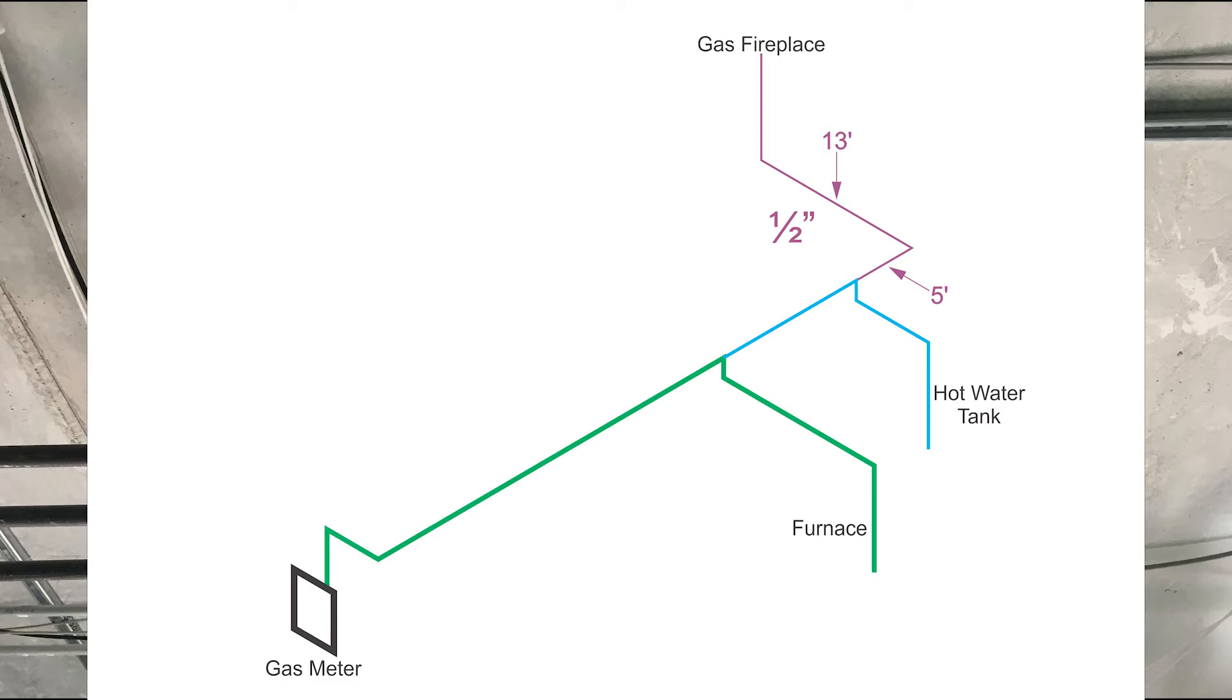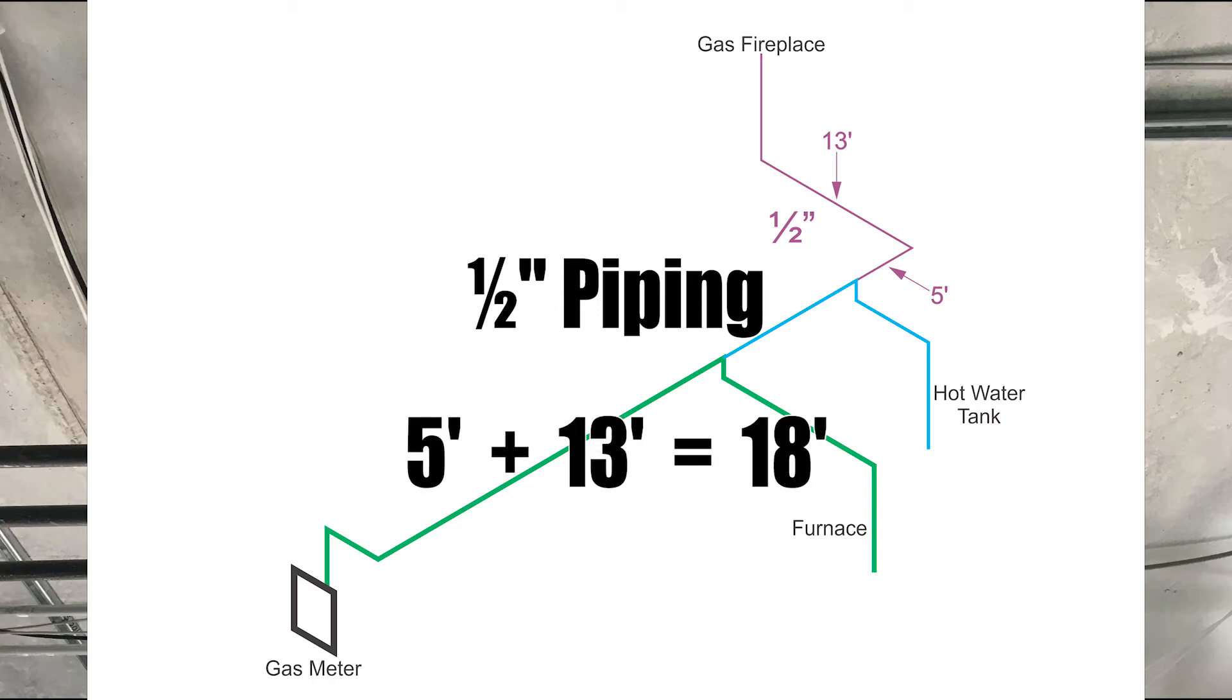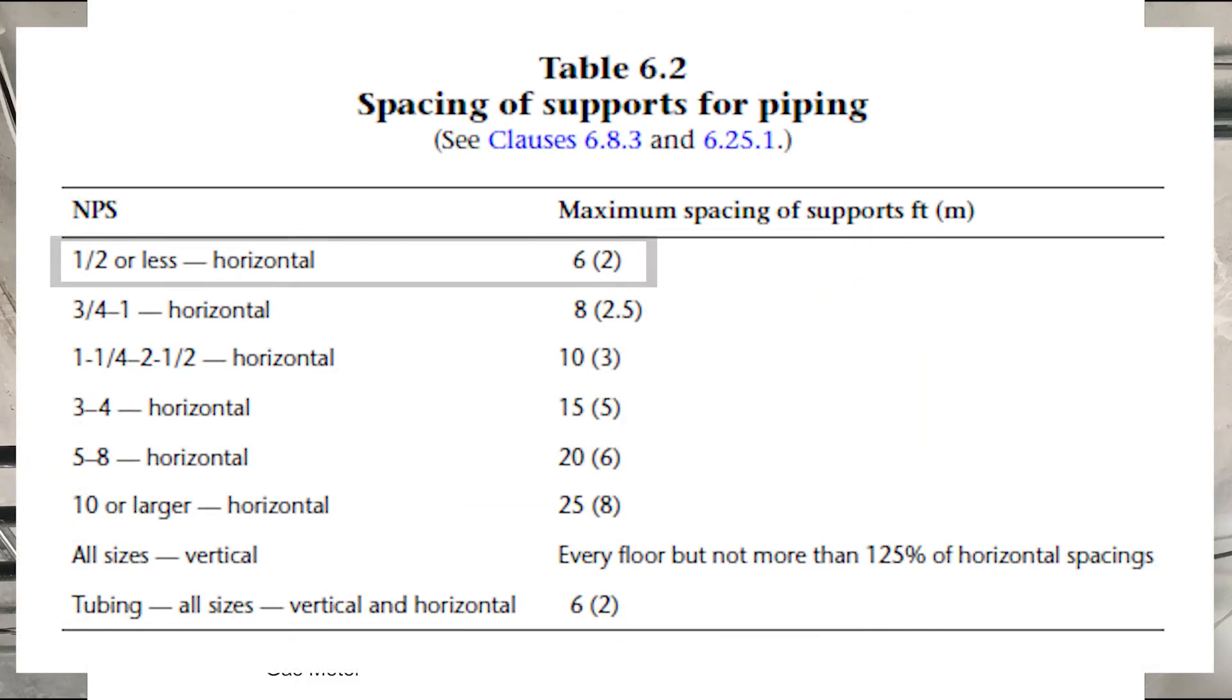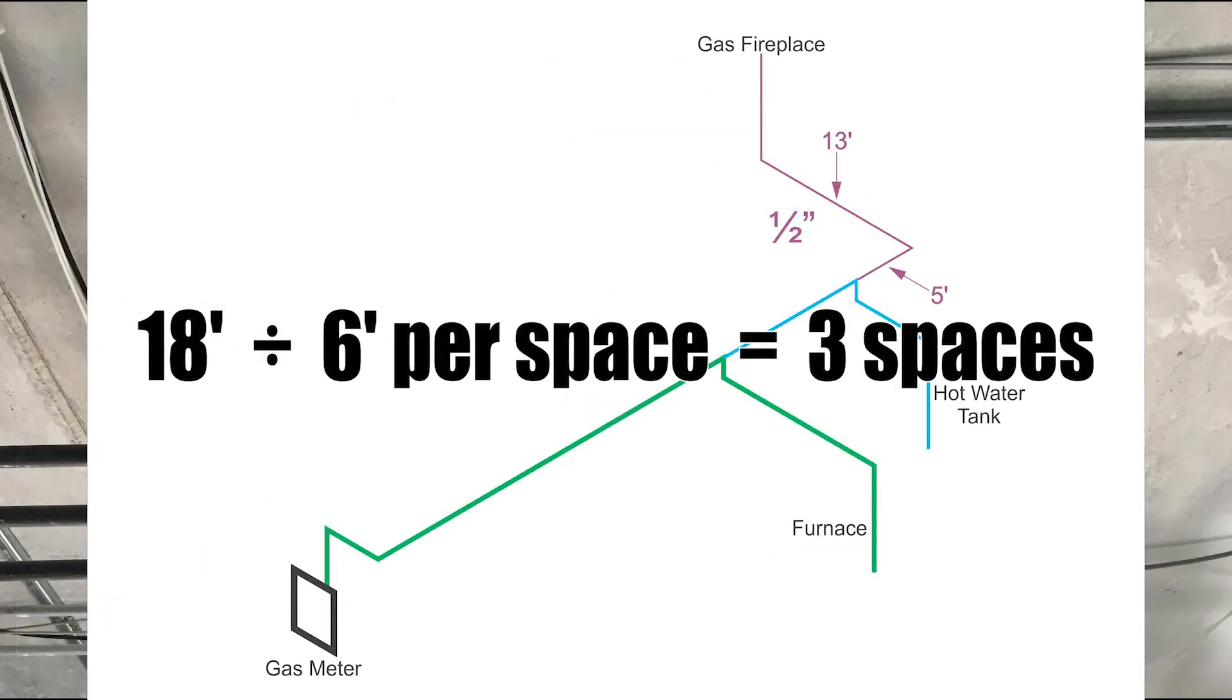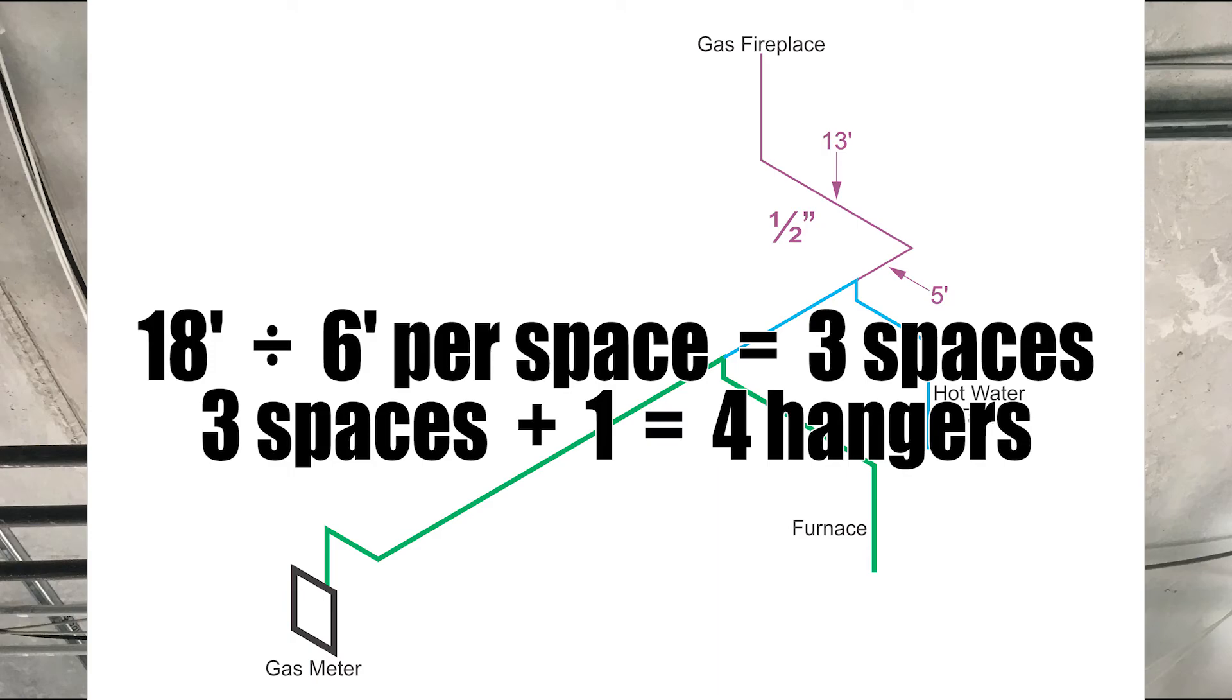The last part is a section of half inch black iron pipe. We have a five foot section going up and across, then a 13 foot section. 13 plus five equals 18 feet of half inch black iron pipe. According to table 6-2, the maximum spacing for half inch is six feet. 18 feet divided by six foot spacing equals three, but we need to add one for that first hanger. So I need four hangers for half inch.